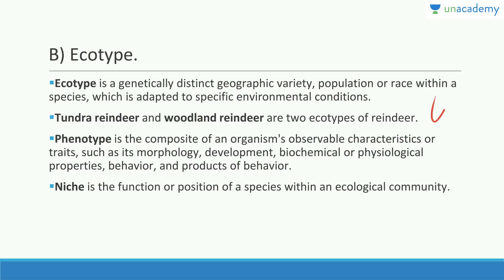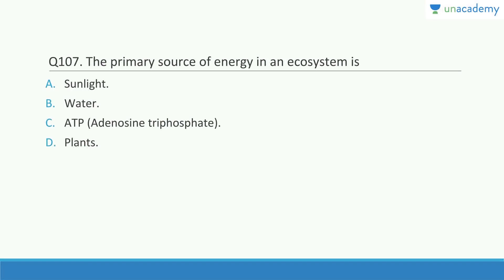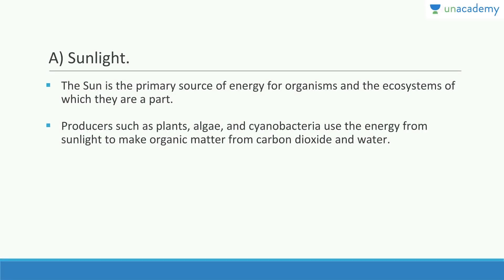The primary source of energy in an ecosystem is always sunlight. The sun is the primary source of energy for organisms and the ecosystem. Producers such as plants, algae, and cyanobacteria use the energy from sunlight to make organic matter from carbon dioxide and water.